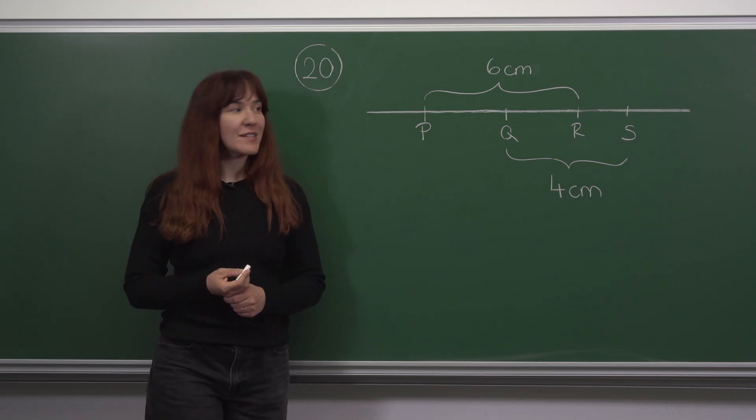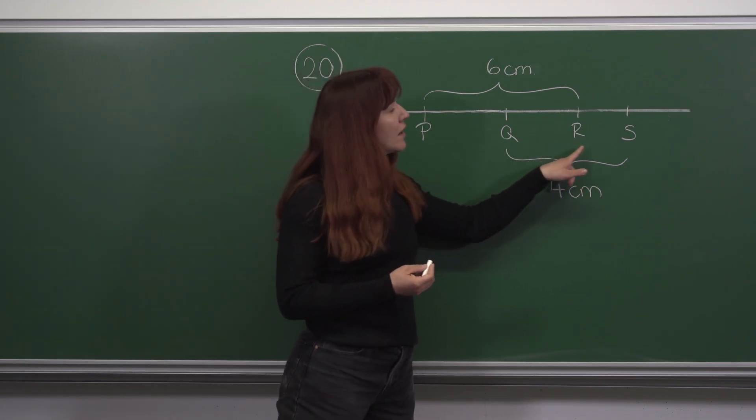In this question we are given four points on a line: P, Q, R and S.